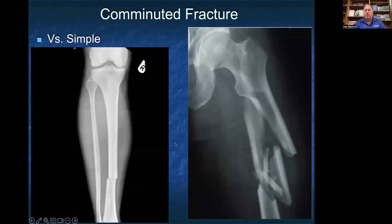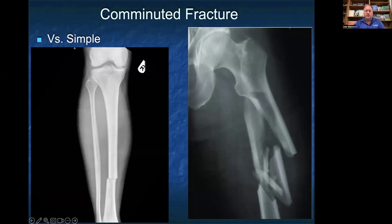Comminuted fractures are fractures that are in multiple fragments. A simple fracture, as seen on the left in this fracture of the tibia, has just two parts — a distal part and a proximal part. On the right, you can see a comminuted fracture of the femur where it's broken into multiple pieces.